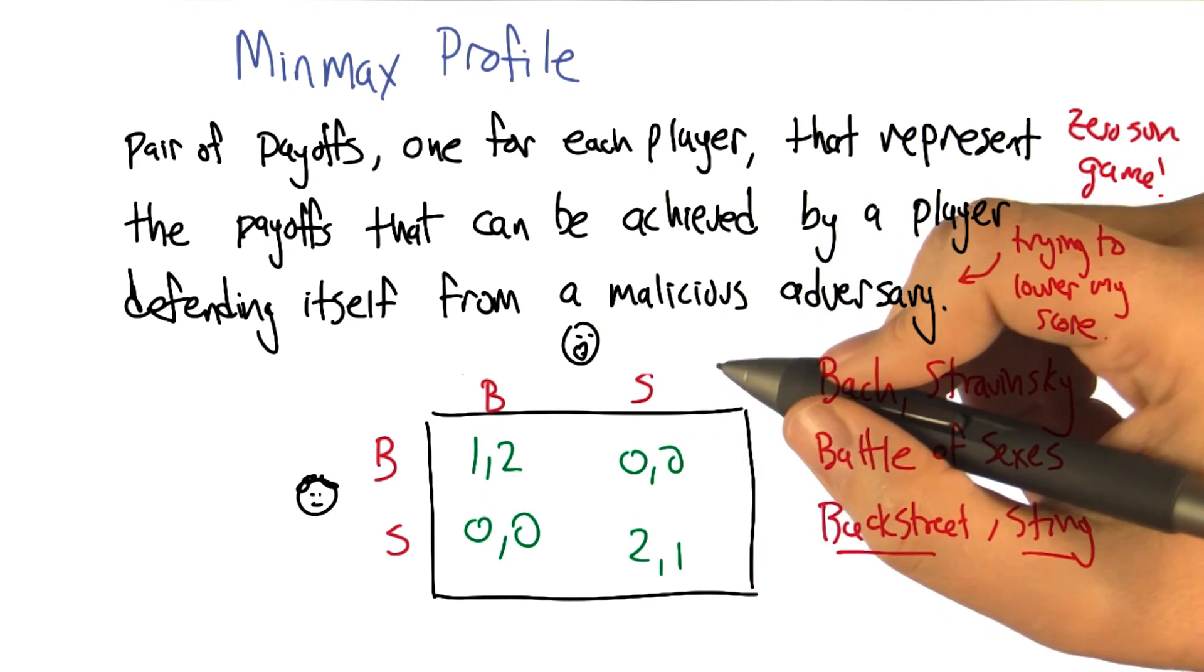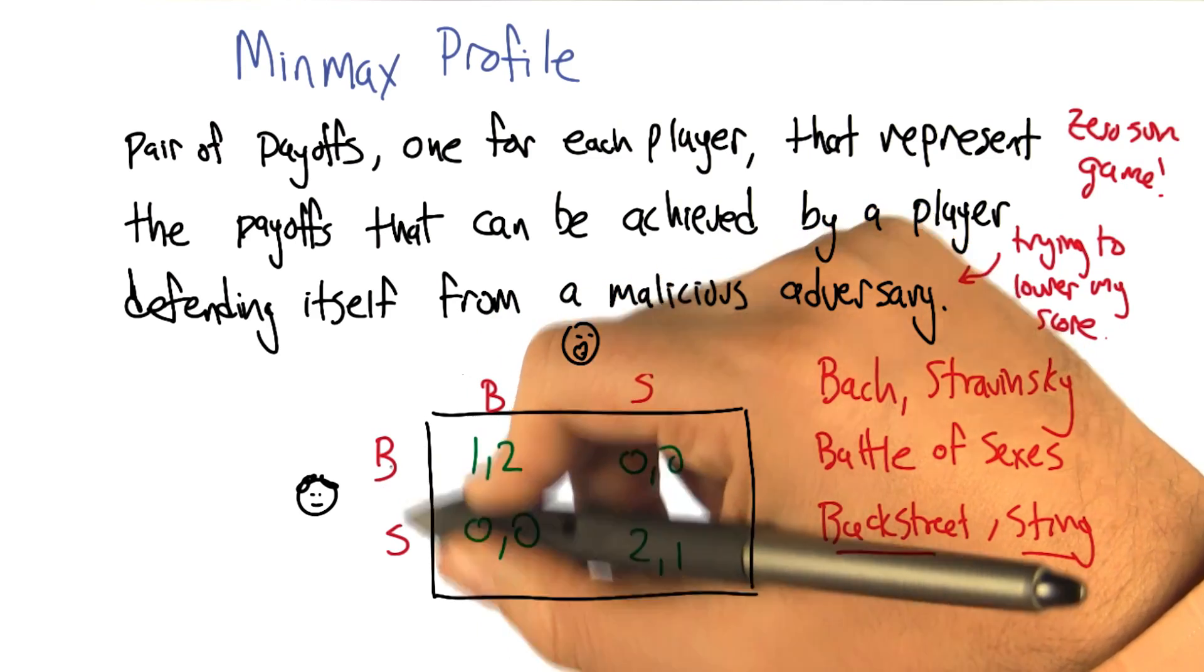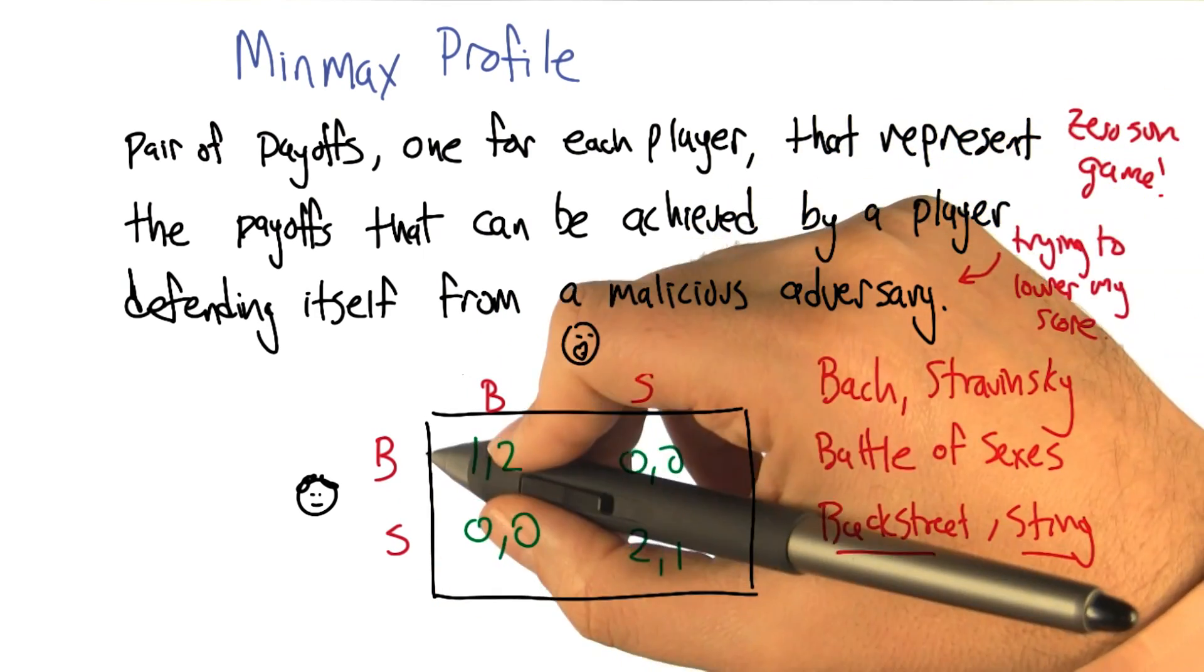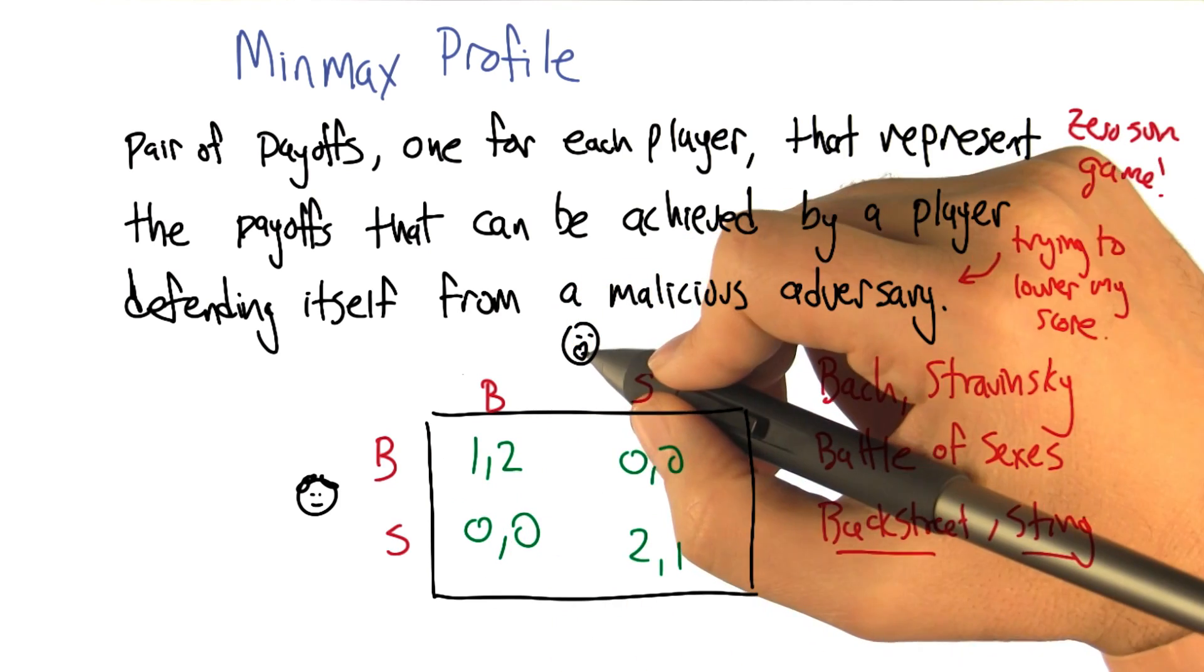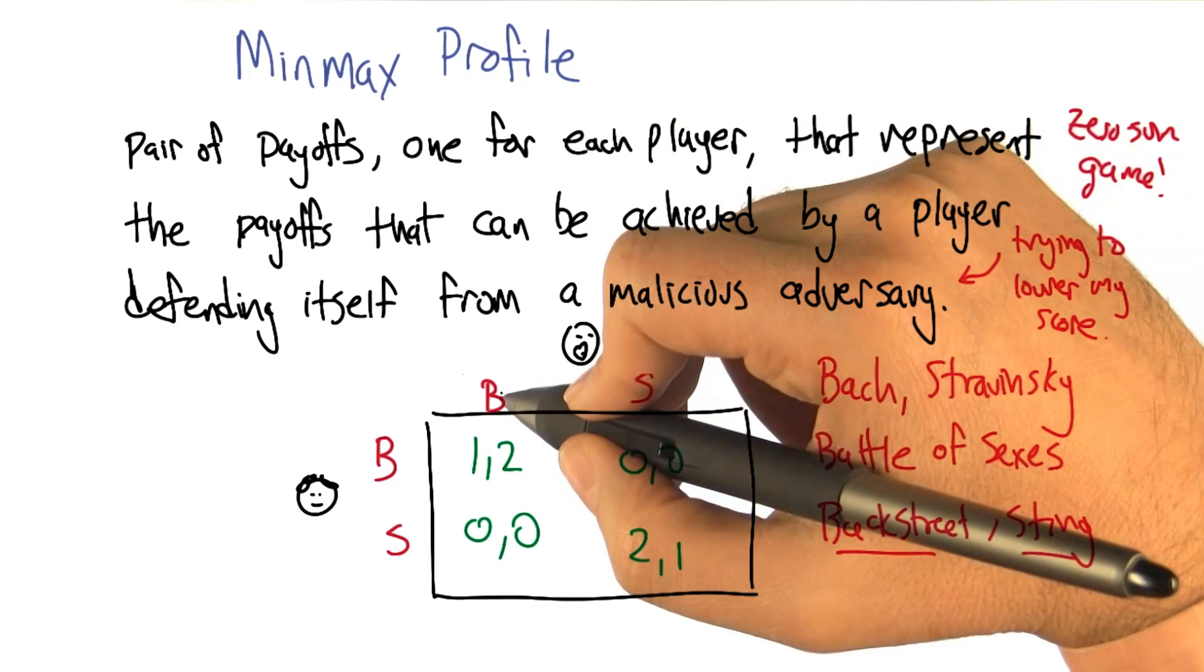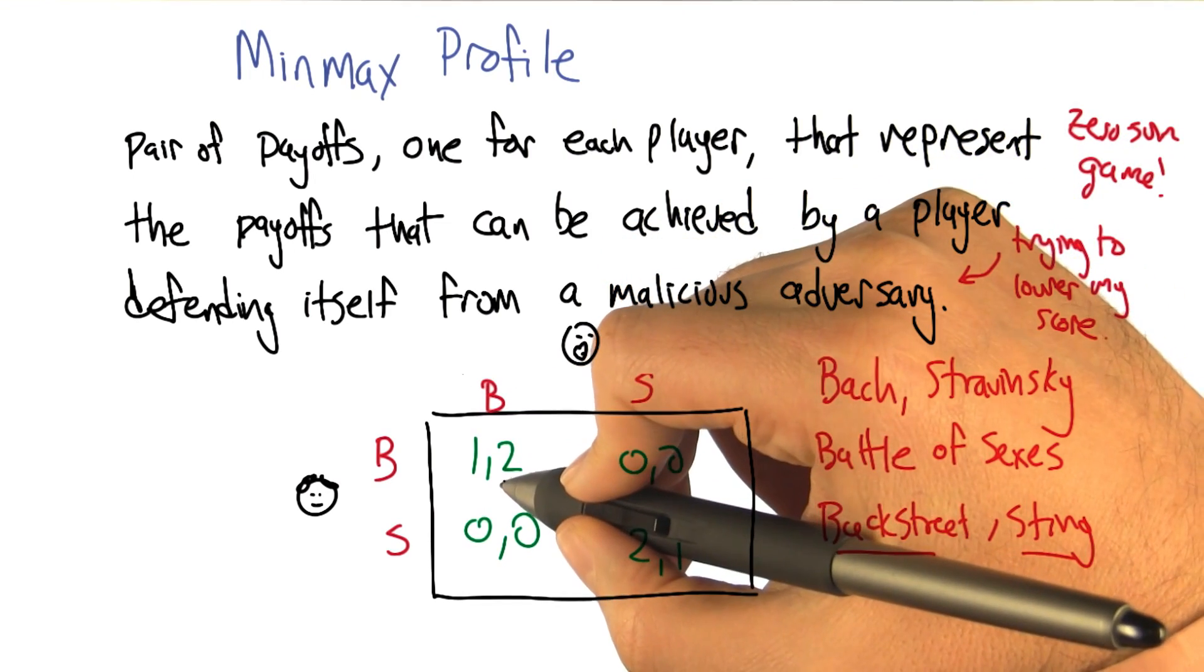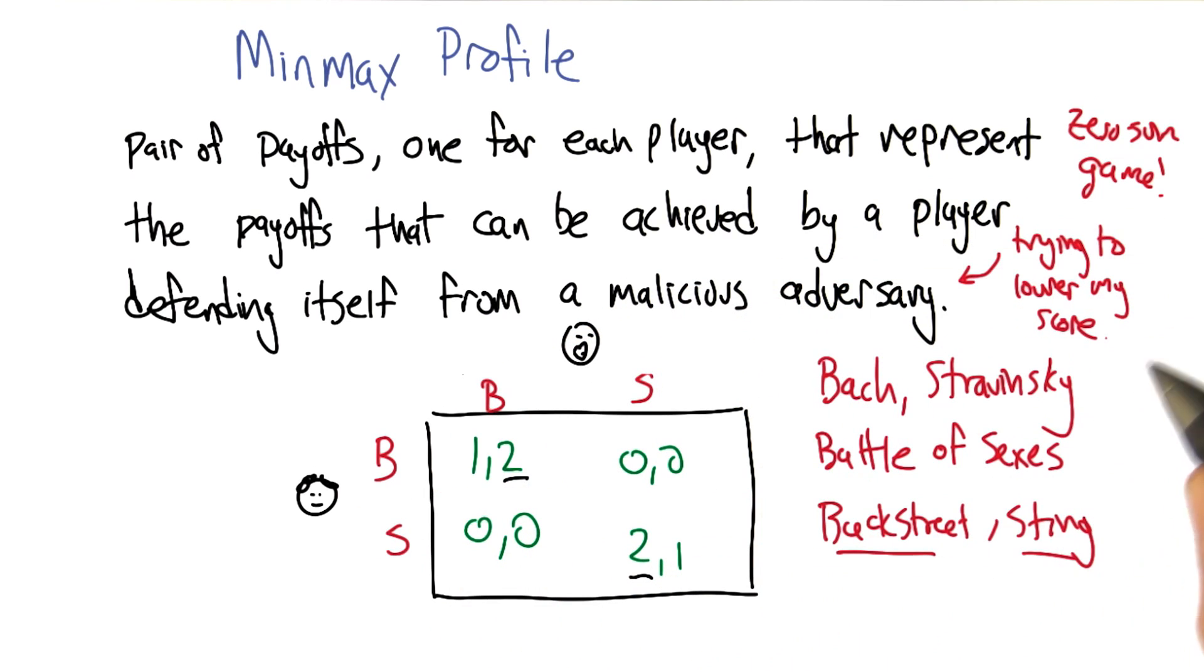Now, as it turns out, each of them is now going to have to choose whether to go to the concert with the Backstreet Boys or Sting. And they're choosing independently. Now, if they end up going to different concerts, they're both going to be unhappy and get zeros. If they end up at the same concert, then they're going to be happier. But in fact, as it turns out, Smoove really likes the Backstreet Boys and would prefer that they both end up at the Backstreet Boys concert. But Curly really likes Sting and would prefer that they end up at the Sting concert.